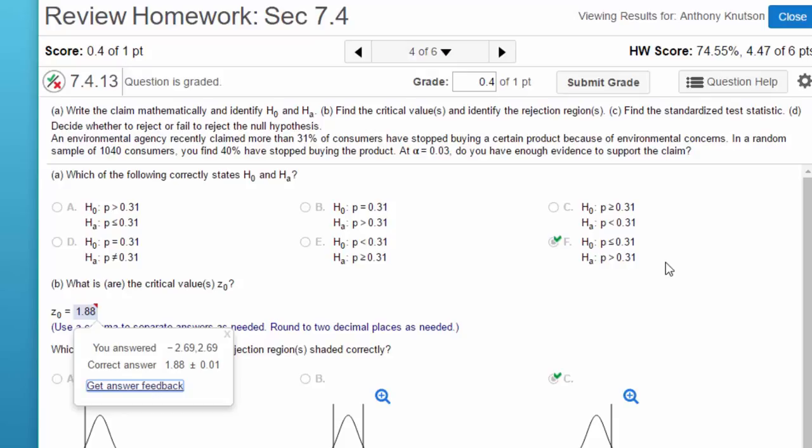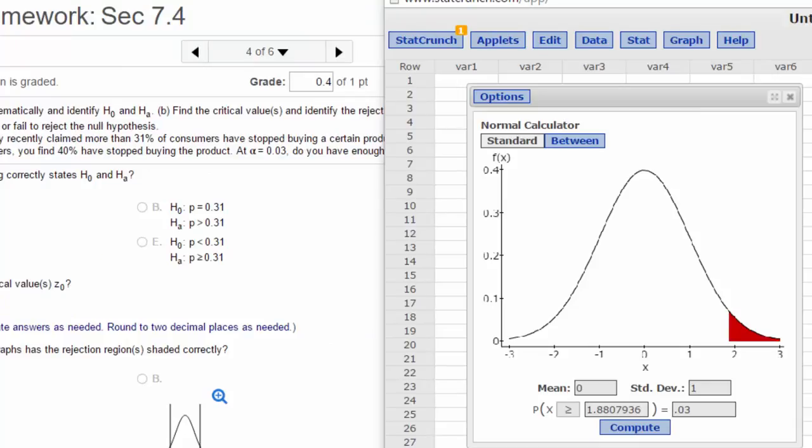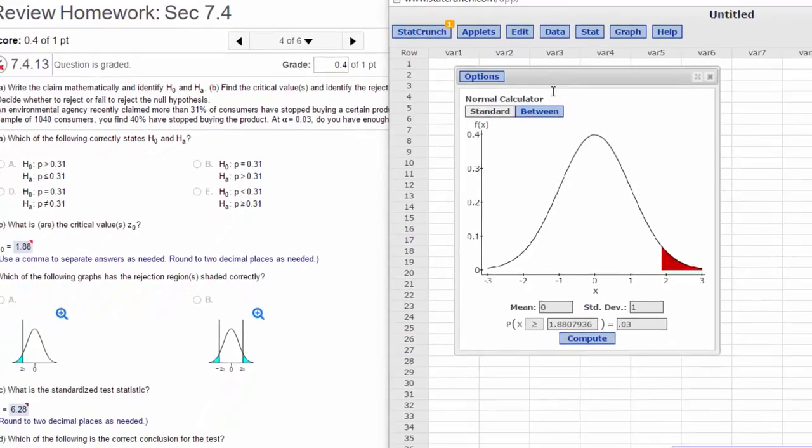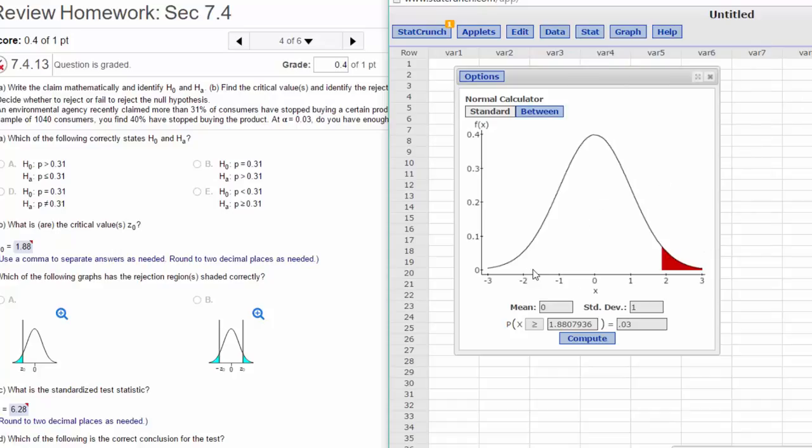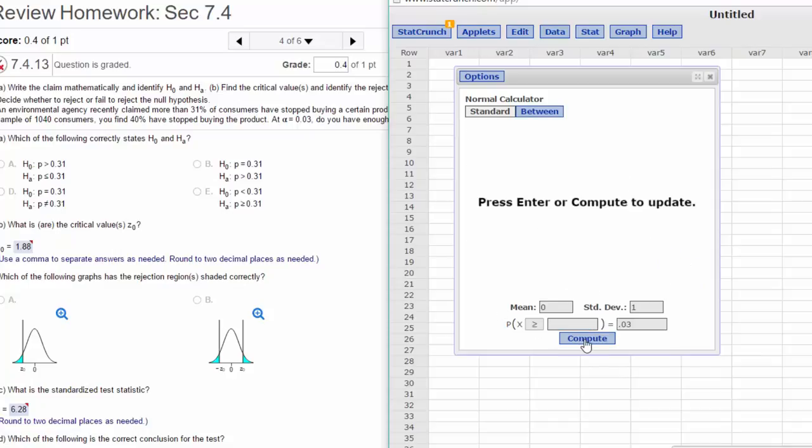So let's look at StatCrunch. Here's StatCrunch and I've already called up the normal calculator, which I think you know how to use—just stat, calculators, normal gets you this thing. We know it's a right-tailed test so our symbol should be the greater than or equal, and our alpha is 0.03, so we put 0.03 in the probability. I'll just click that out and recalculate, and so we get the critical value of z is 1.88, just a single value.